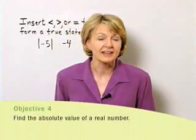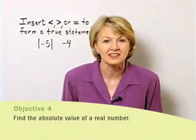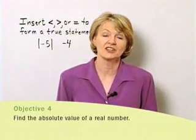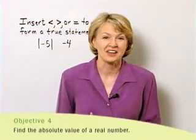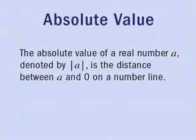Now that we know about number lines, let's look at an application of distance — we call this application the absolute value of a number. The absolute value of a real number A, denoted by those two vertical bars, which we read as 'the absolute value of A,' is the distance between A and zero on a number line.